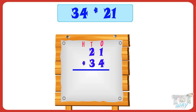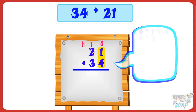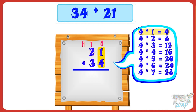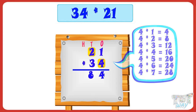Now first multiply 21 with the one's digit of 34. 4 multiplied by 1 equals 4. Write 4 in the product at 1's place. 4 multiplied by 2 equals 8. Write 8 in the product at 10's place.